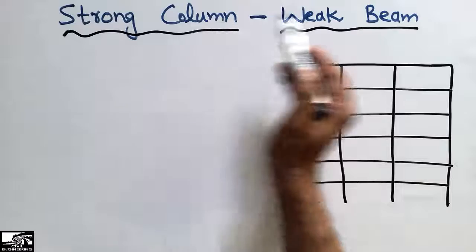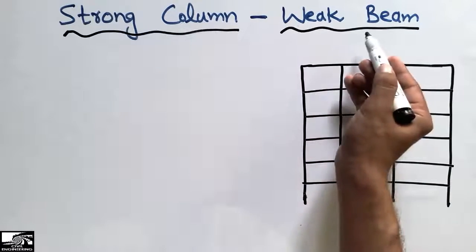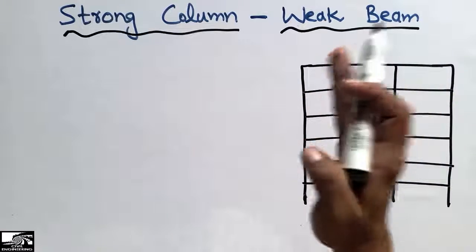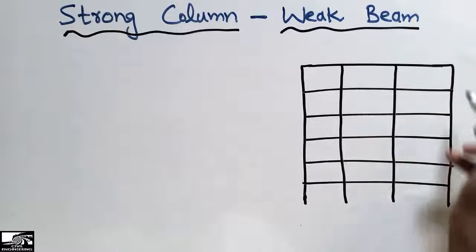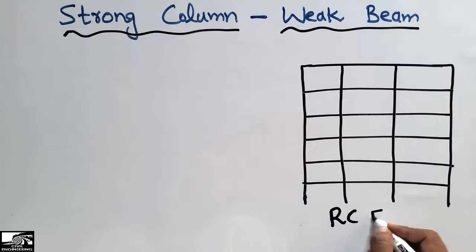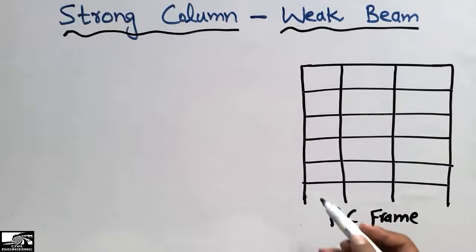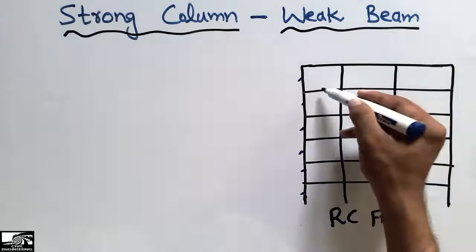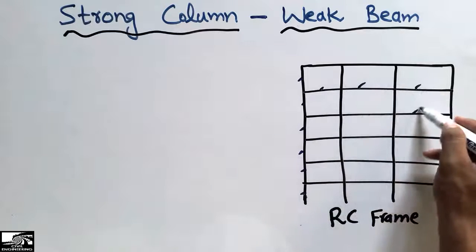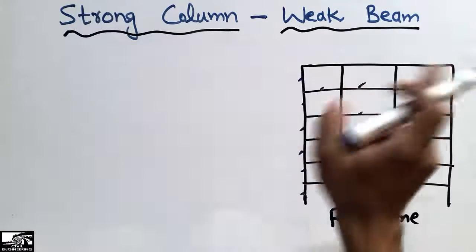The strong column and the weak beam — when you provide the strong column and the weak beam, there is a failure mechanism that we should want to avoid. Consider this RC frame structure: this structure consists of beams and columns. These vertical members are the columns, while these horizontal members are the beams.